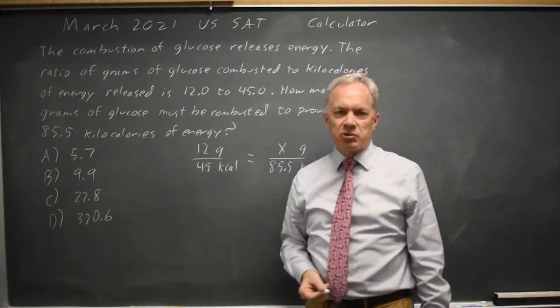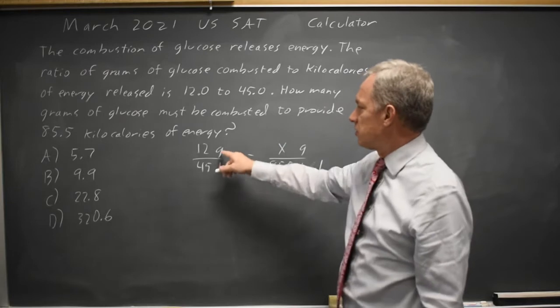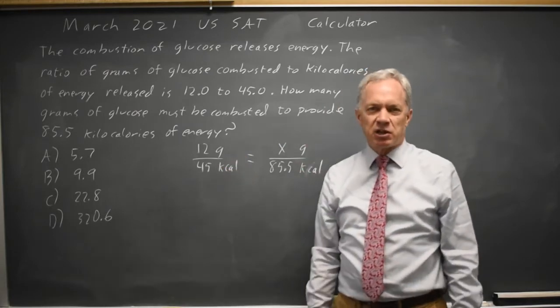And I like to write the labels in there so I don't get confused and flip something by accident. Here I see it's grams over kilocalories, it equals grams over kilocalories. I feel like I probably did that right.